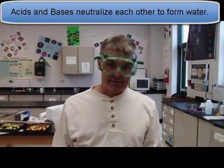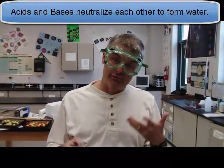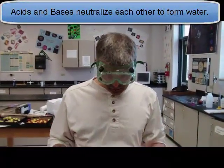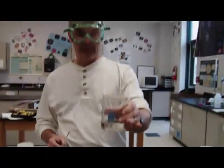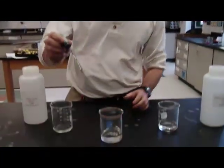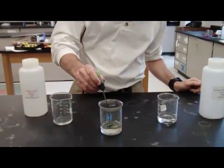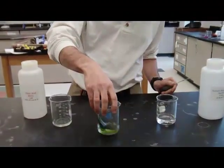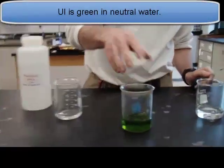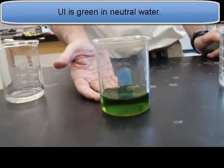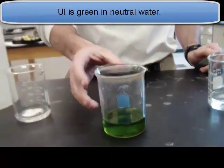Now, one thing about acids and bases is that they neutralize each other. Acid neutralizes base to form water. So I happen to have a beaker filled with water. Now, the way I can tell it's water, I have the indicator, universal indicator. I'm going to put a few drops in here, and it turns kind of a greenish color. So this is neutral water with a pH of roughly 7, probably a little off because it's tap water.